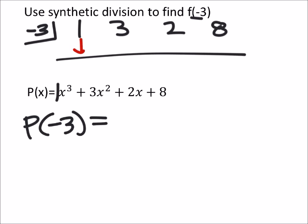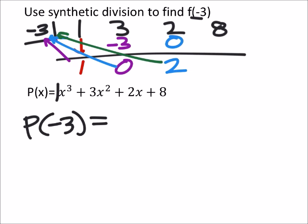So let's go ahead and drop our 1. 1 times negative 3 is negative 3, so then we've got 0. And then we've got 0 times negative 3, which is 0. 2 plus 0 is 2, and then finally we've got 2 times negative 3, which is negative 6, and our remainder 2 is the answer here.